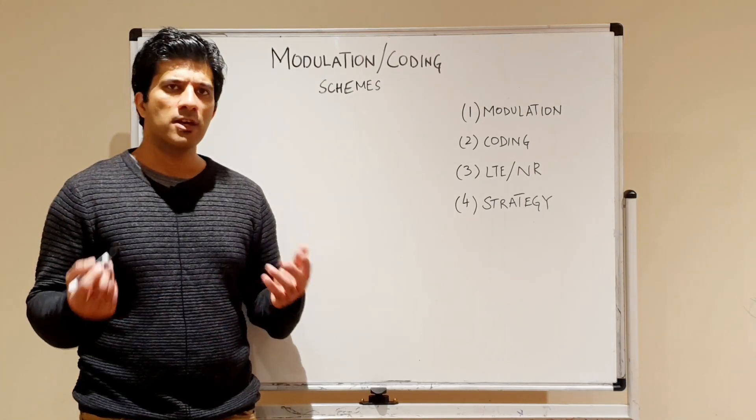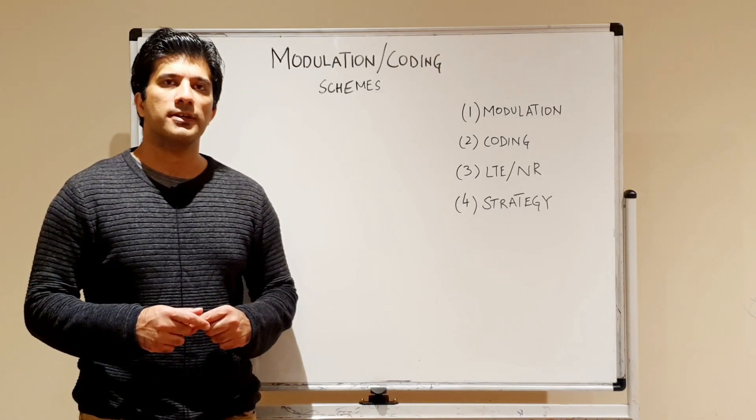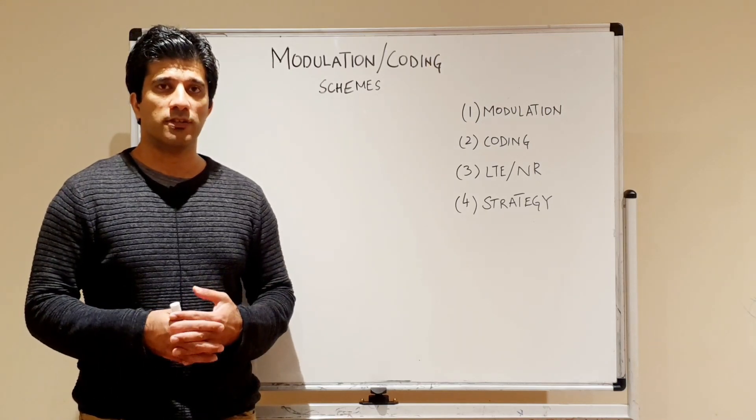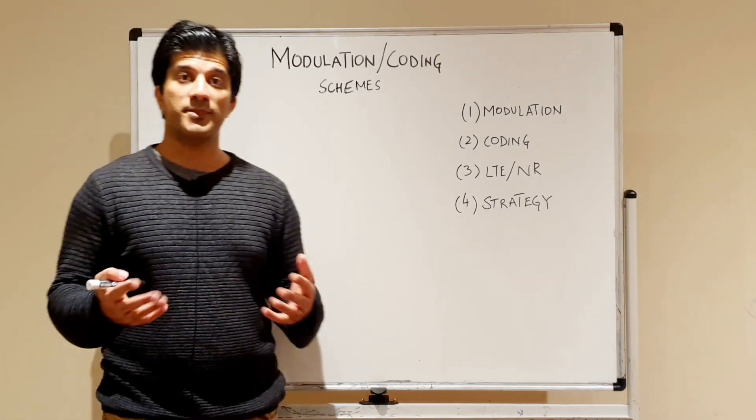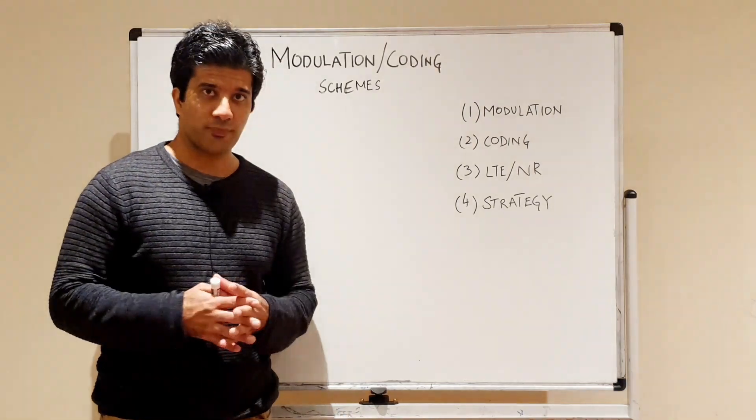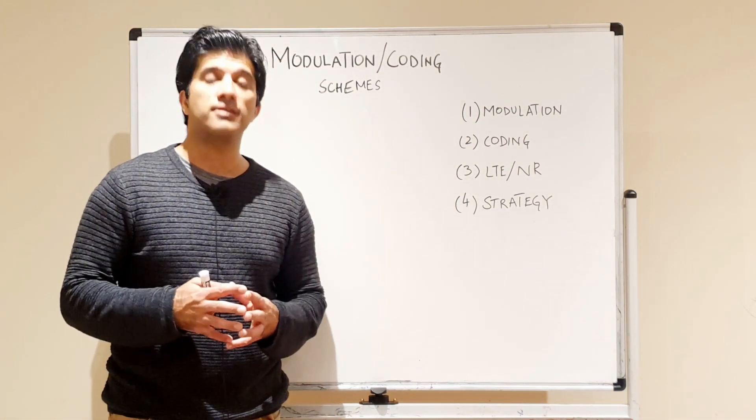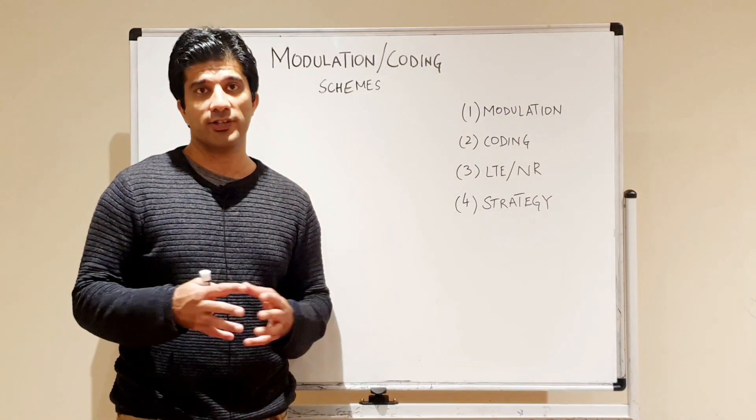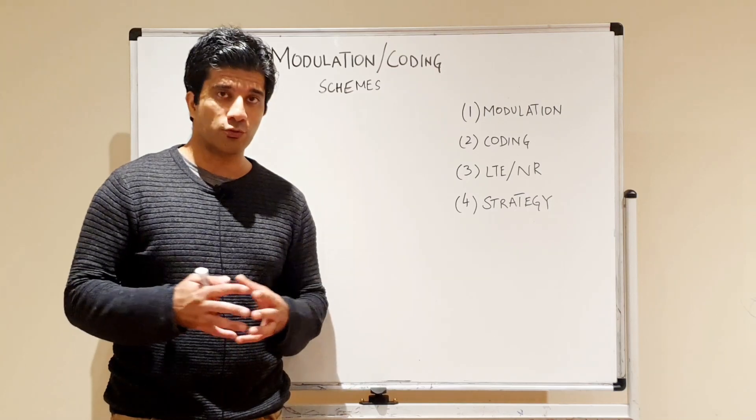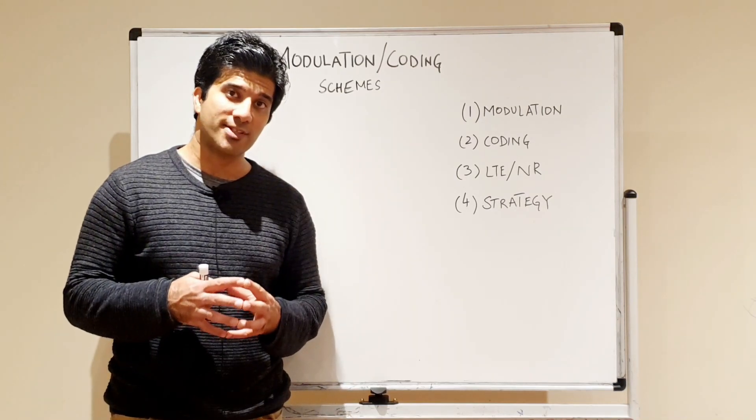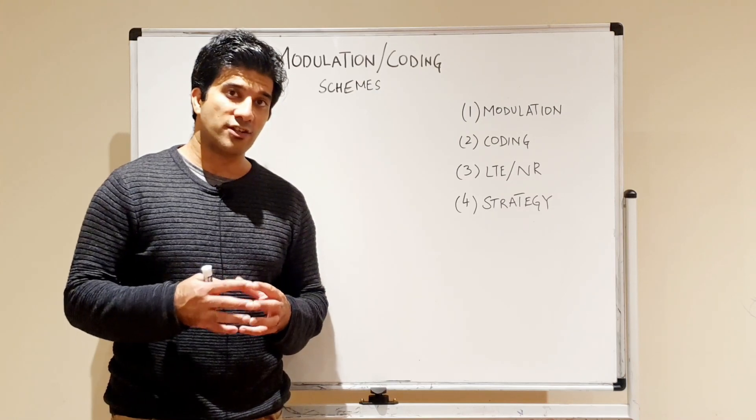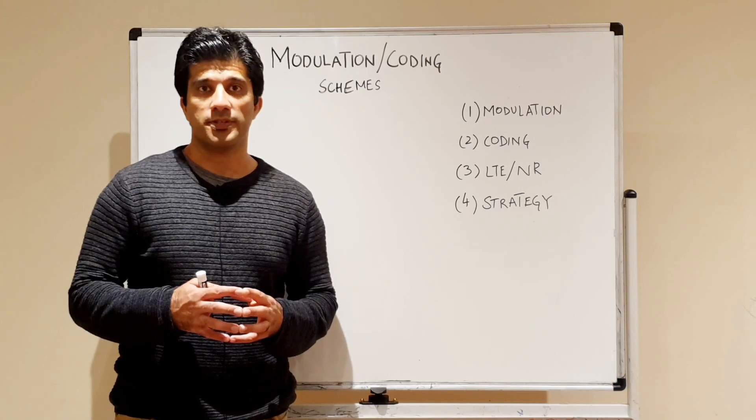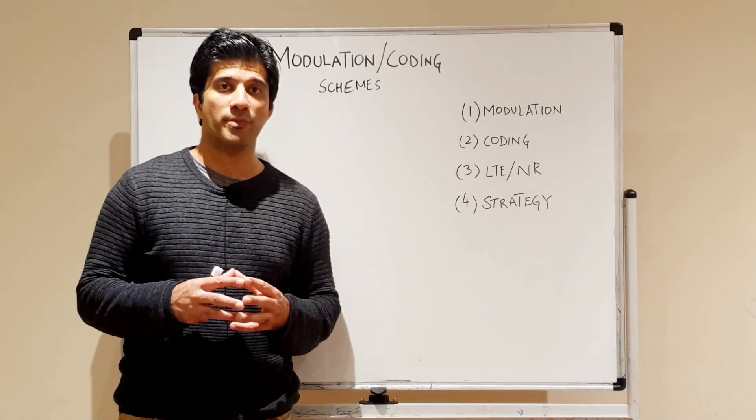Often in our day-to-day work we refer to the UE having good modulation or good MCS schemes to have good throughput. But a question that I wanted to emphasize on: how does MCS actually help the UE to have good throughput, and how do higher order modulation schemes actually help to get more data to the user using the same physical resources?